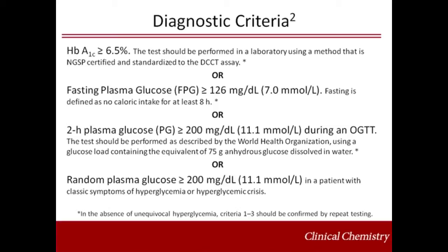In 2009, an international expert committee, which comprised members appointed by the ADA, the European Association for the Study of Diabetes, and the IDF, recommended that diabetes be diagnosed by measurement of hemoglobin A1C, which reflects long-term blood glucose concentrations. The test should be performed in a laboratory using a method that is certified by the National Glycohemoglobin Standardization Program. Almost all hemoglobin A1C methods are certified by the NGSP.